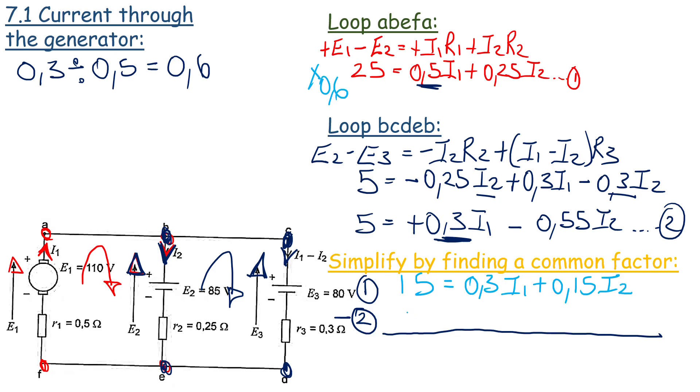Right, if we substitute equation 2, it is 5 is equal to 0.3 I1 minus 0.55 I2. So as you can see we can cancel out 0.3 I1. 15 minus 5 is equal to 10 and we end up with 0.7 I2.